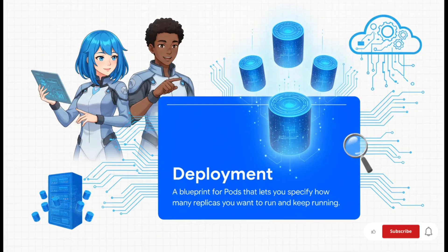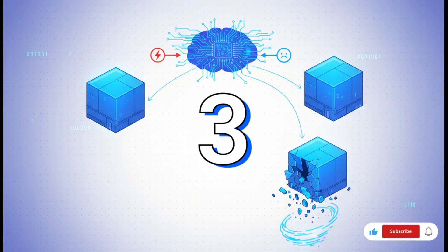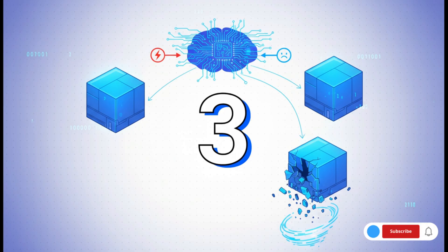In practice, you almost never create pods by themselves. Instead you create a deployment. A deployment is basically a blueprint where you declare your desired state. You just tell Kubernetes: 'I want three copies of this application running at all times.' And the deployment's job is to be the manager that makes that happen. If one of those pods crashes, the deployment controller immediately sees the gap — you want three but only two are there — and instantly spins up a new one. This is automatic self-healing, and it is the absolute key to high availability.